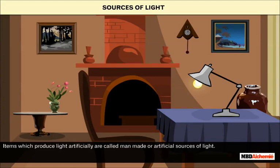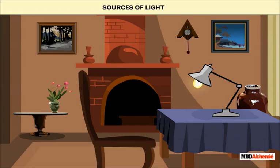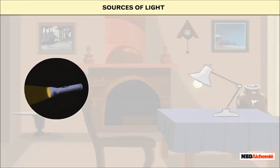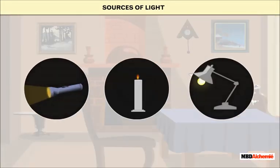Items which produce light artificially are called man-made or artificial sources of light. For example, torch, table lamp, and lighted candle.